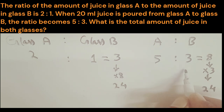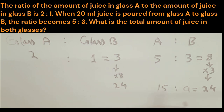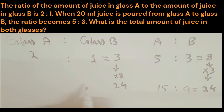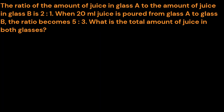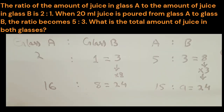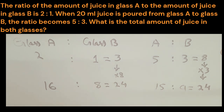We increase the second ratio by 3 times: 3×3=9 and 3×5=15, so the later ratio becomes 15:9, totaling 24. We increase the first ratio by 8 times: 8×1=8 and 8×2=16, so the earlier ratio becomes 16:8, also totaling 24. These are the actual amounts; the given ratios were simplified forms.